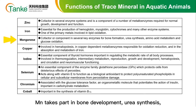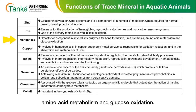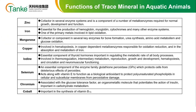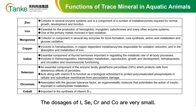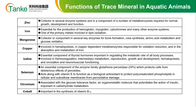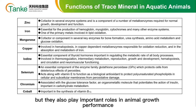Manganese takes part in bone development, urea synthesis, amino acid metabolism, and glucose oxidation. Copper is involved in hematopoiesis; an adequate level of copper could improve the absorption and metabolism of iron. The dosages of iodine, selenium, chromium, and cobalt are very small, but they also play important roles in animal growth performance.